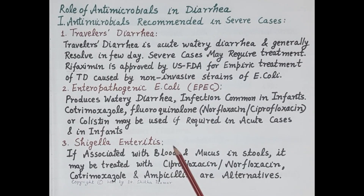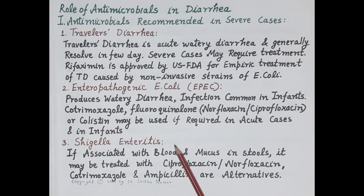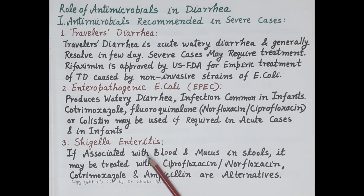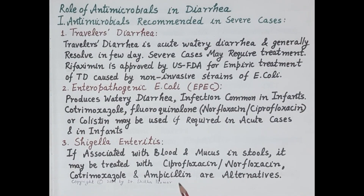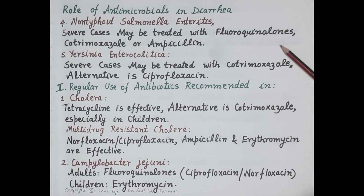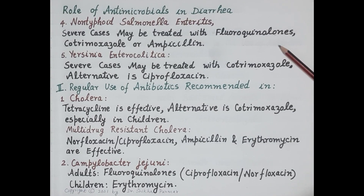Third is diarrhea caused by Shigella enteritis infection. Again, it is self-limiting, but if this diarrhea is associated with blood and mucus in stools, it may be treated with ciprofloxacin or norfloxacin. Cotrimoxazole and ampicillin are the alternatives.